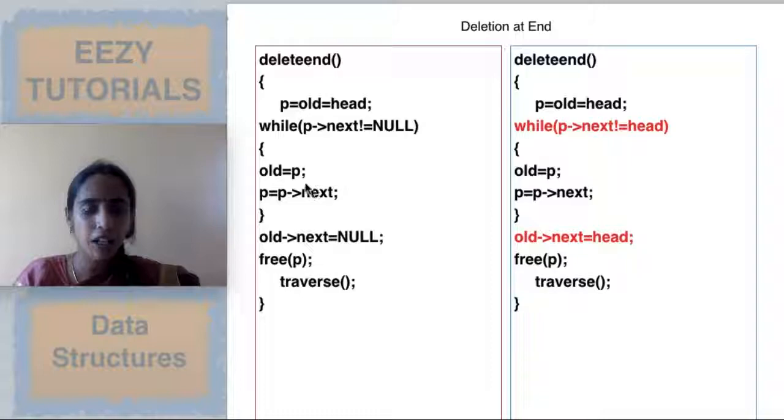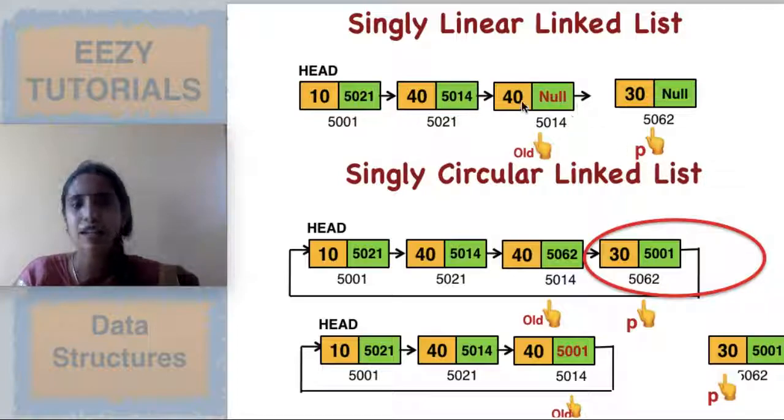To make the pointers placed in the last and last but one node, repeatedly have to move old and p. Old equals p, p equals p of next. Old will jump to p, p will jump to next of p. Consecutively this will happen and at the end when the condition is met, old will be at the last but one place and p will be at the last place.